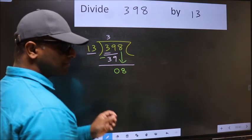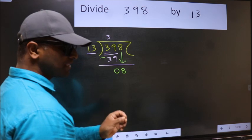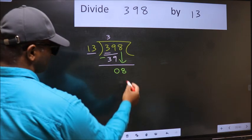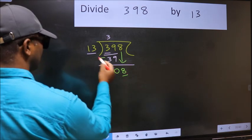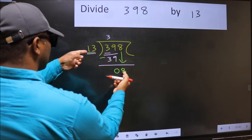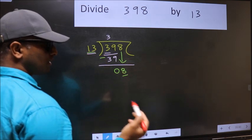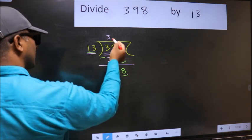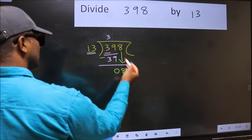After this step, the mistake happens. And the mistake is this: here we have 8 and here 13. 8 is smaller than 13, so what many do is they directly put dot and take 0.